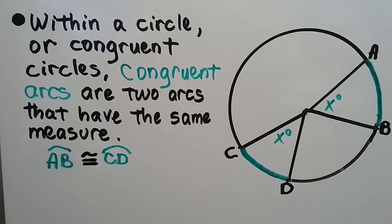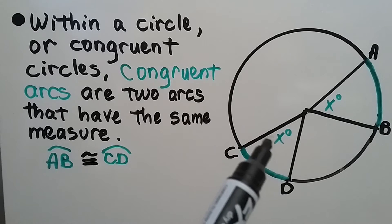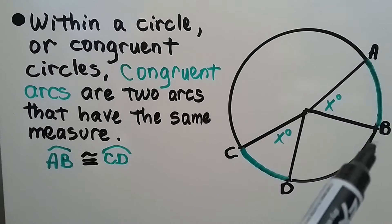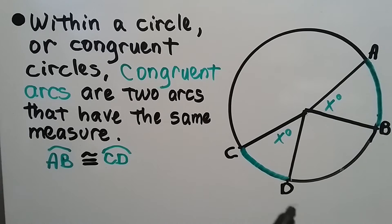Within a circle or congruent circles, congruent arcs are two arcs that have the same measure. If you look, these are both x degrees. Arc AB is congruent to arc CD. They're congruent arcs.